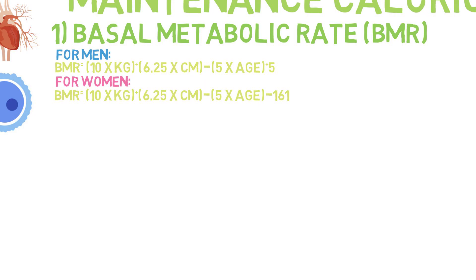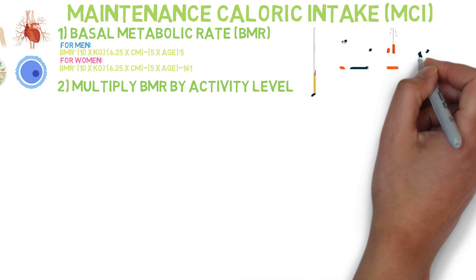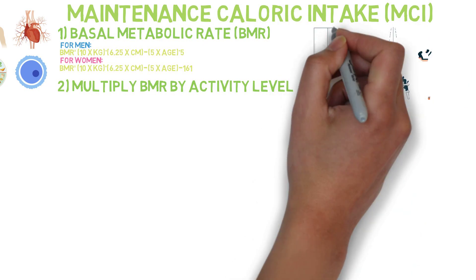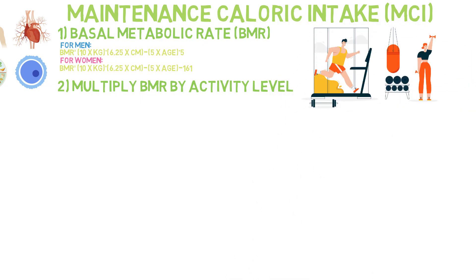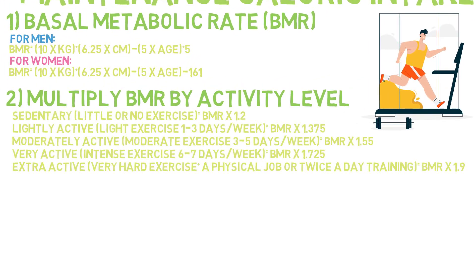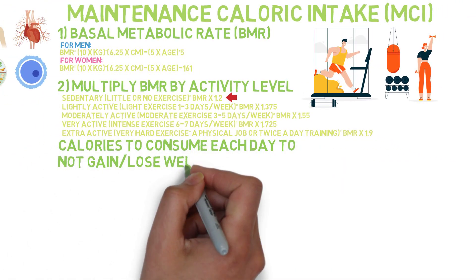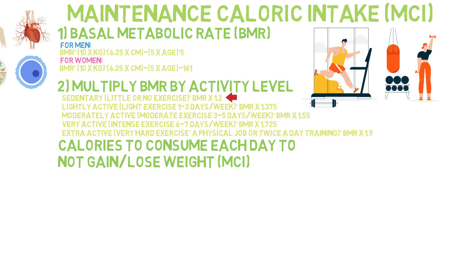The second step involves taking your BMR and multiplying it by your activity level per week — how intense and frequent your exercise is in combination with whether you work a physical job. For instance, if you do not currently do any exercise and fall under sedentary, we take your BMR and multiply it by 1.2, and the answer gives us your maintenance caloric intake.